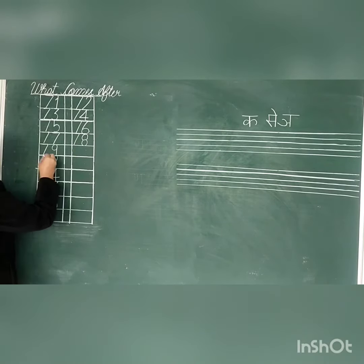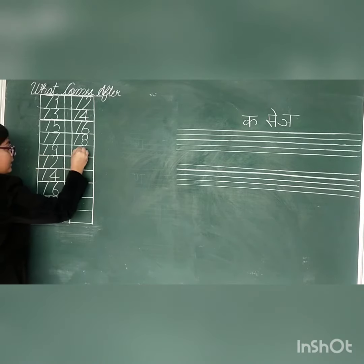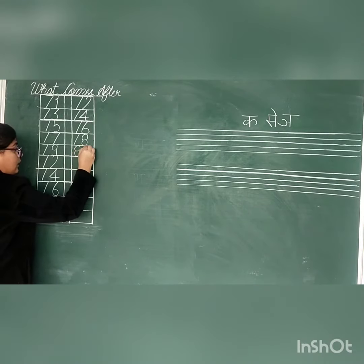Next: 7, 9, 79. 7, 9, 79 after: 8, 0, 80.